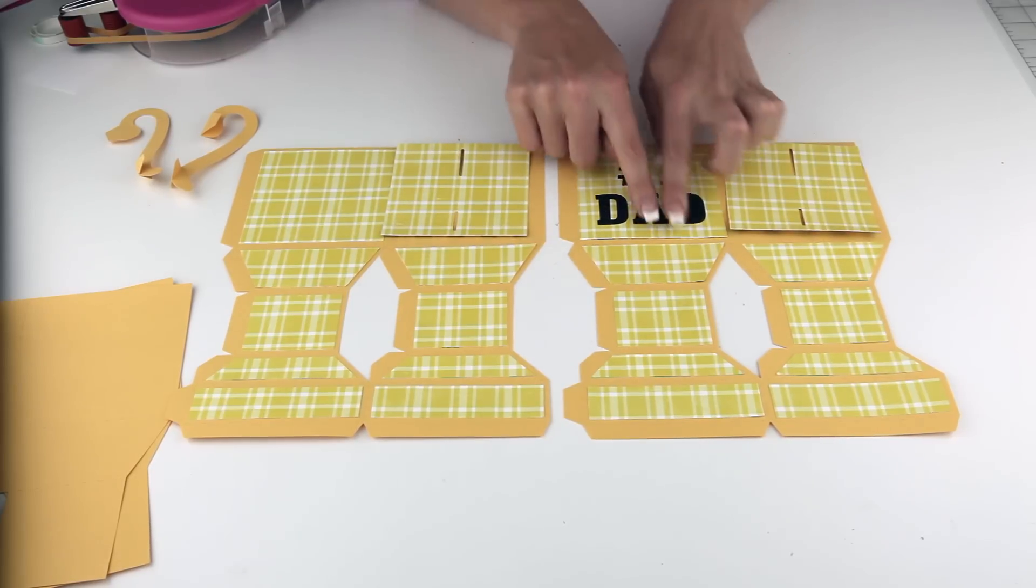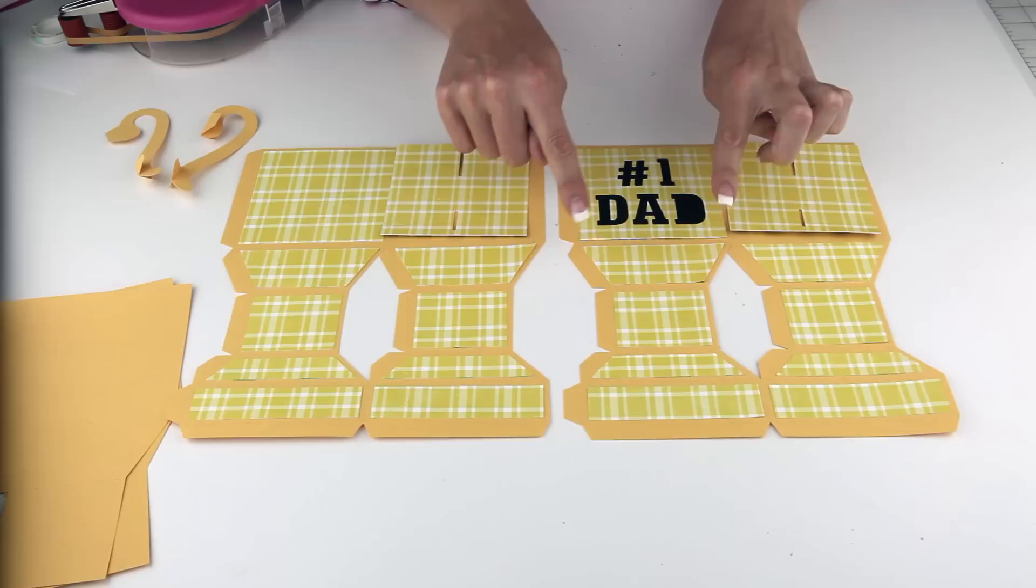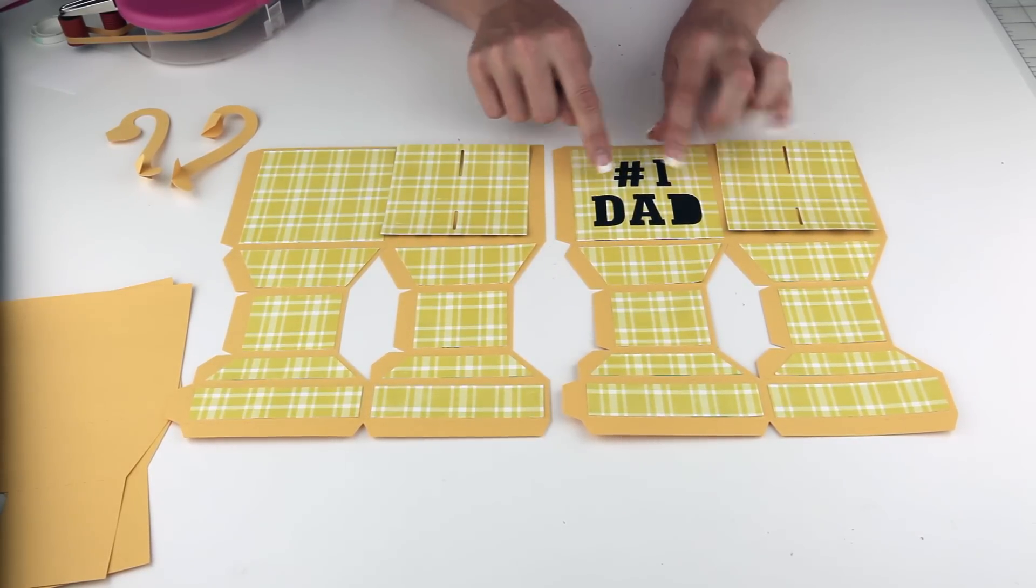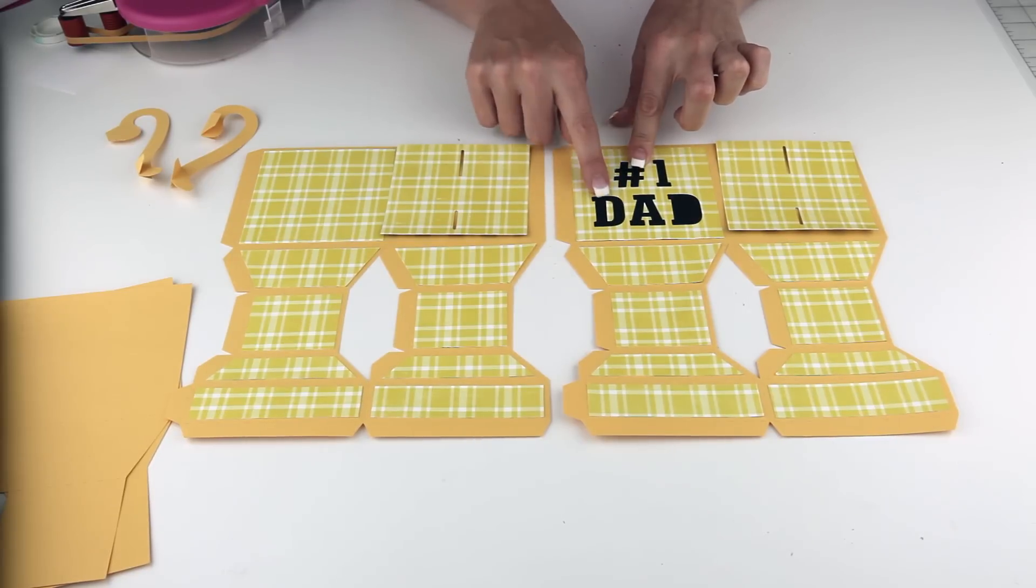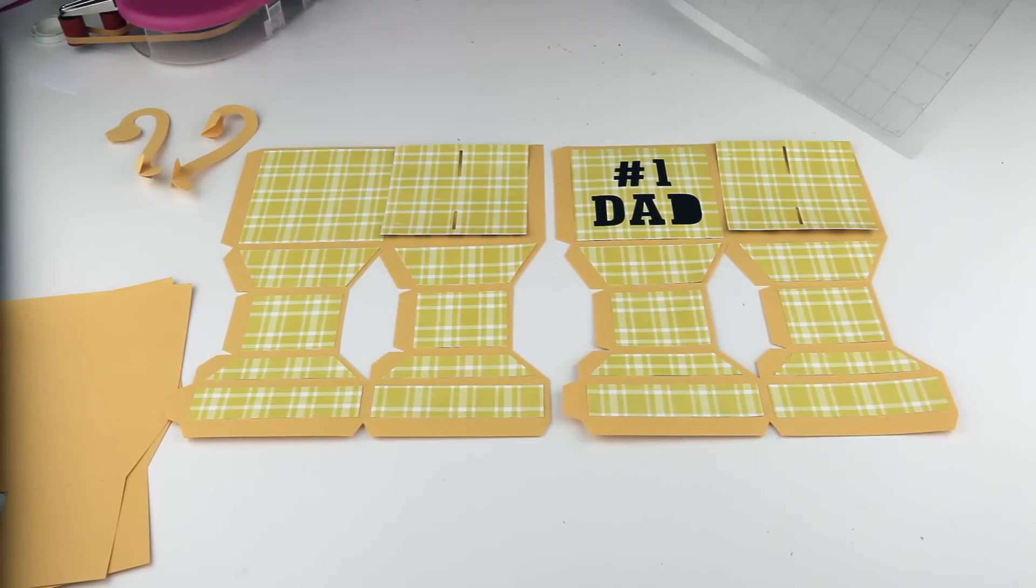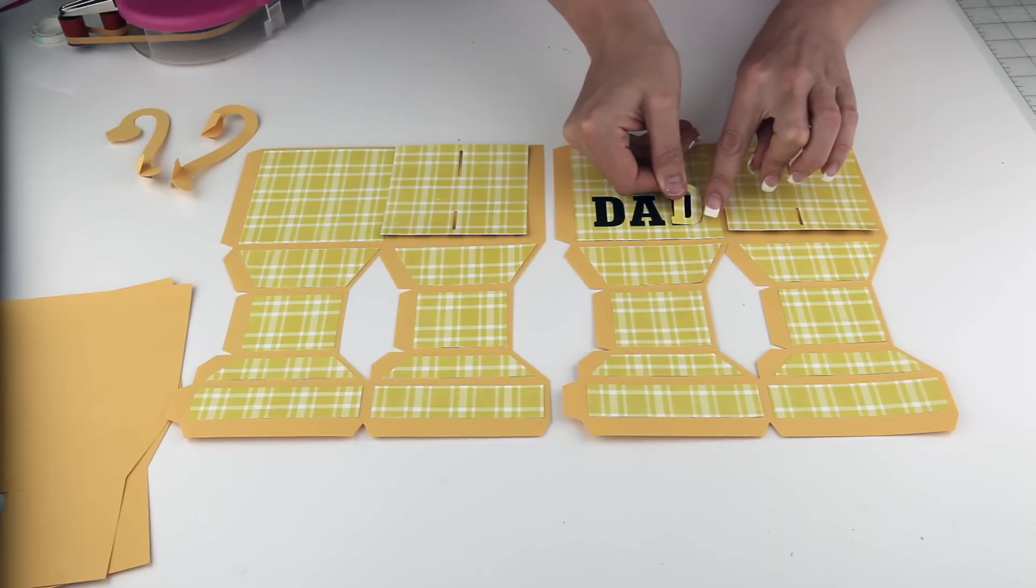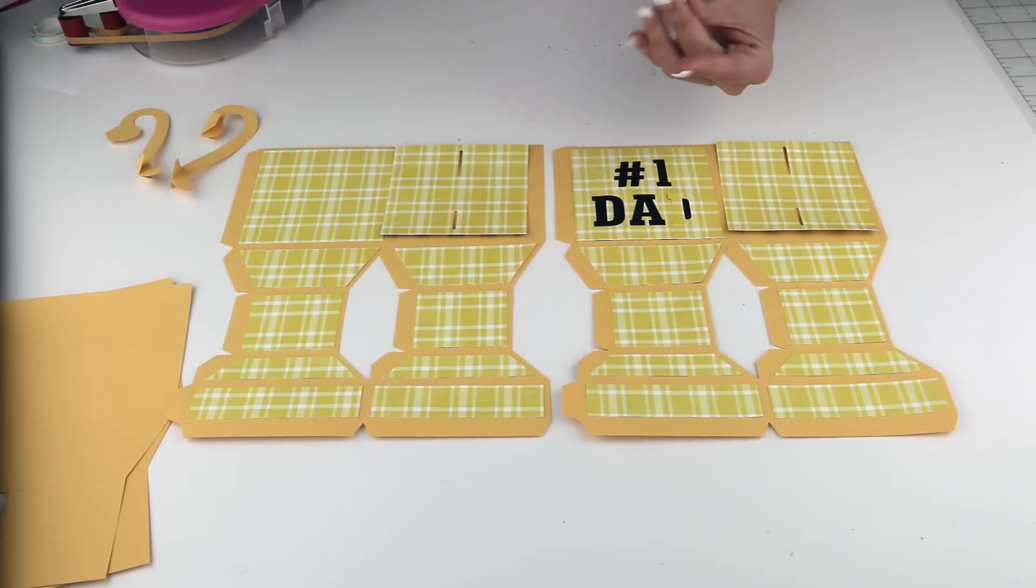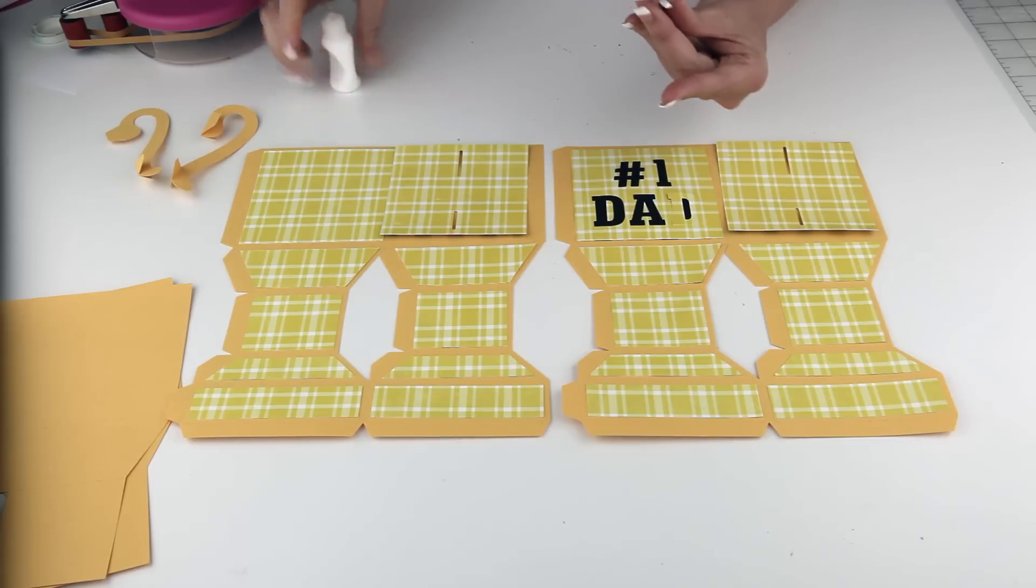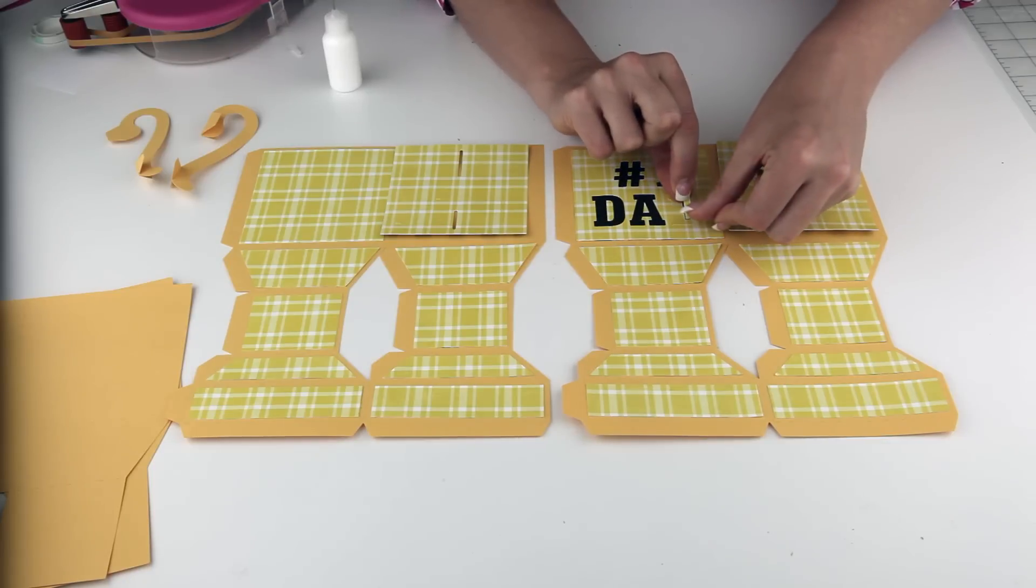The other thing that I went ahead and did is I put down the black piece of paper underneath this patterned cardstock and I have filled in the little negative pieces in the letters. I wanted to show you how I did that in an easy way. I have this D and I just set it down in place, put a little adhesive on the back of my negative piece, and lay that down right in place.